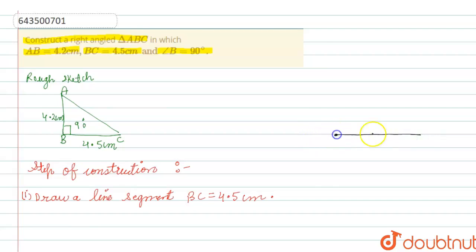This will be a line segment BC of 4.5 centimeter. Clear. Now step number two.